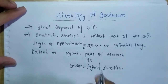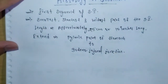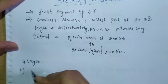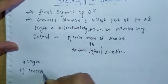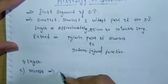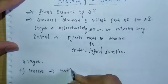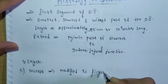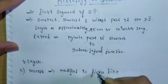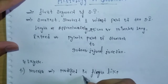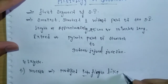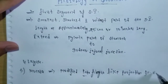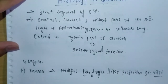Now we talk about the duodenum's four layers. The first layer is mucosa, which is modified into finger-like projections called villi.